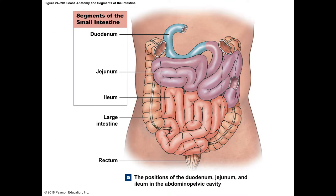The liver, gallbladder, and pancreas are accessory organs that secrete substances into the duodenum. They bring the pH back up to about 4 to 4.5. The duodenum is called the mixing bowl — it's short, so substances pass through quickly, but it mixes the chyme with secretions from the pancreas, liver, and gallbladder.